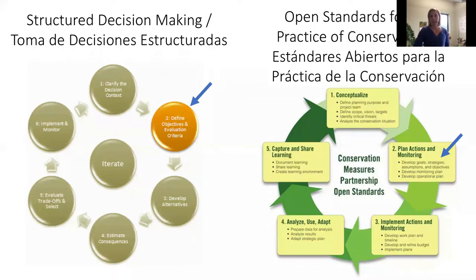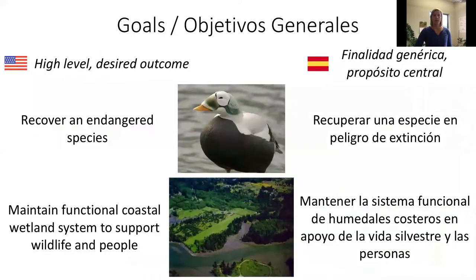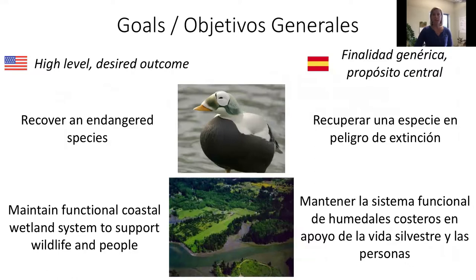These terms can be used in slightly different ways, so I wanted to start by defining how we are using the terms goals and objectives today. When we talk about goals, we are generally talking about high-level desired outcomes — the big picture down the road in the future. What's the desired condition for the system that we're working on? It could be something like trying to recover an endangered species, or something more about the interface between people and nature, like trying to maintain a functional coastal system that supports both wildlife and people.